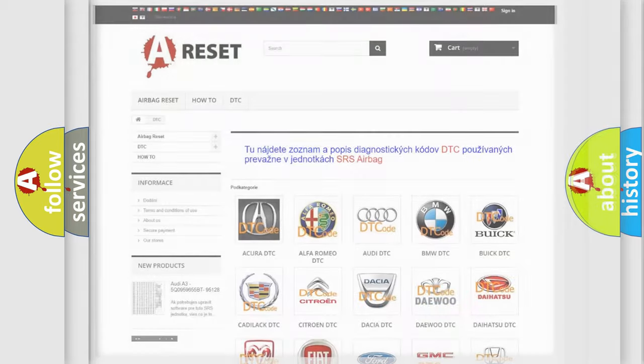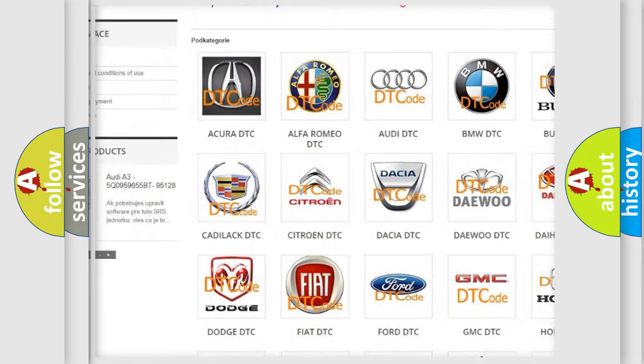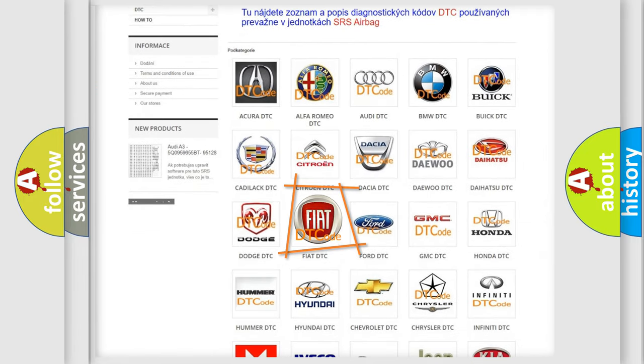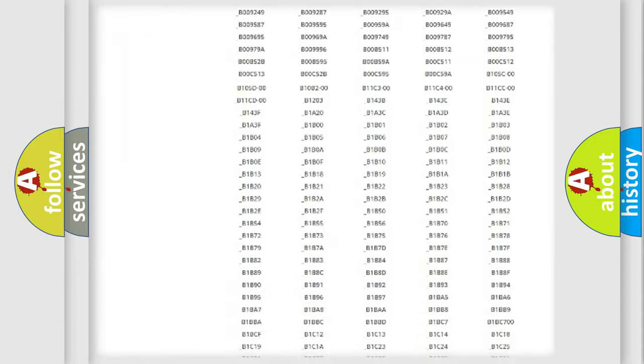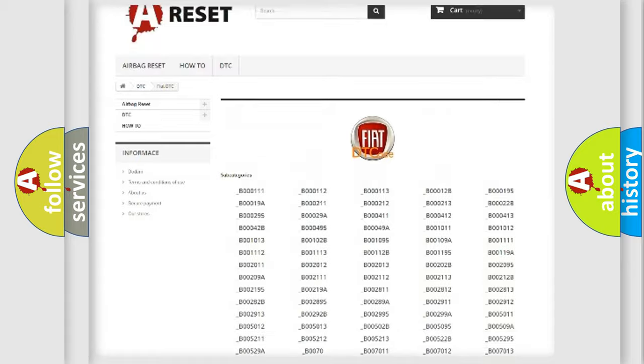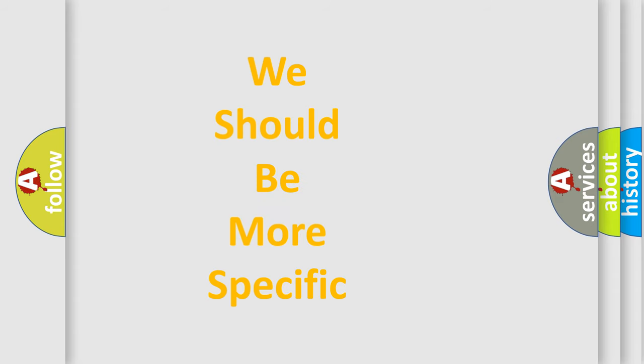Our website airbagreset.sk produces useful videos for you. You do not have to go through the OBD2 protocol anymore to know how to troubleshoot any car breakdown. You will find all the diagnostic codes that can be diagnosed in Fiat vehicles, also many other useful things. The following demonstration will help you look into the world of software for car control units.